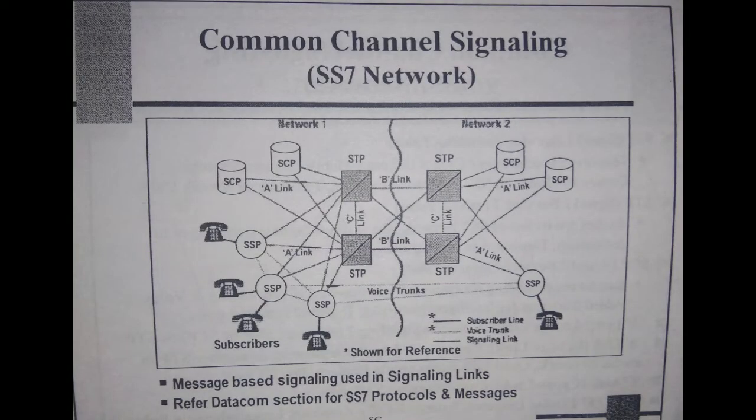Now let's discuss Common Channel Signaling using the SS7 network. The key difference between Channel Associated Signaling and Common Channel Signaling is that in Associated Signaling there is no separate channel for signaling, but in Common Channel Signaling there is a separate channel for signaling.